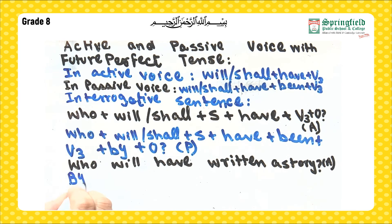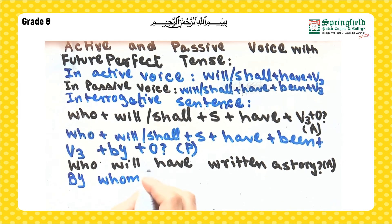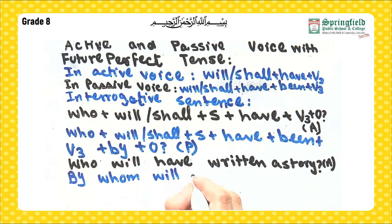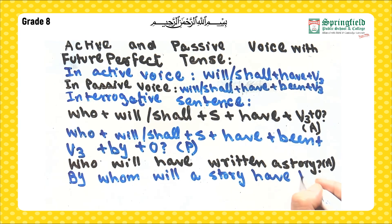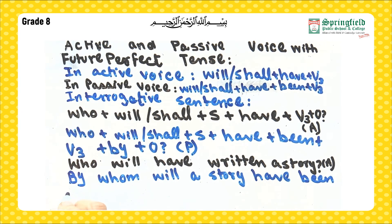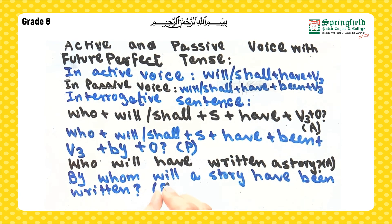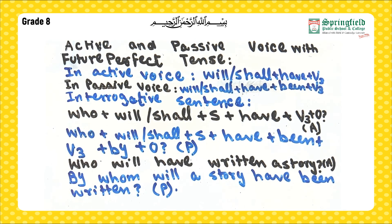When we change it into passive, it becomes: 'By whom will a story have been written?' — this is in passive voice. So this is all about active and passive voice in present, past, and future perfect tenses.